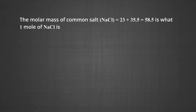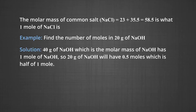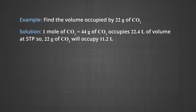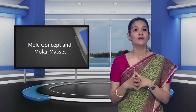Example: to find the number of moles in 20 grams of NaOH using the unitary method — since 40 grams of NaOH (the molar mass) contains 1 mole of NaOH, 20 grams of NaOH will have 0.5 moles, which is half of 1 mole. Another example: to find the volume occupied by 22 grams of carbon dioxide — since 1 mole of CO₂ equals 44 grams and occupies 22.4 liters at STP, 22 grams of CO₂ will occupy 11.2 liters. You can use simple unitary method in solving such questions once the mole concept is known.